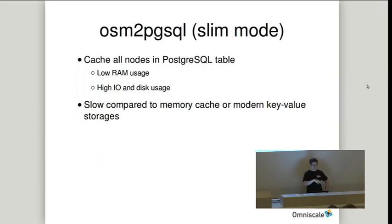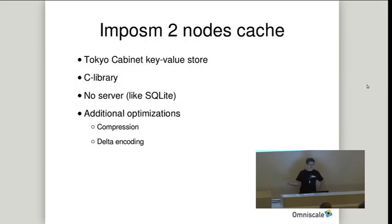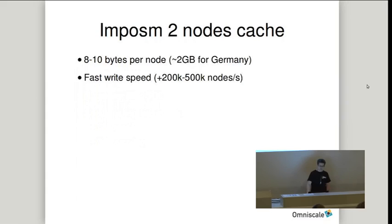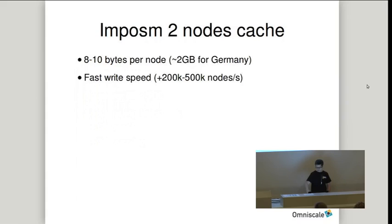The slim mode caches everything in PostgreSQL — it's much slower than memory or other modern key-value stores. So what we did with Impossum 2: we built a cache not in memory and not in PostgreSQL, but used a key-value store — in this case Tokyo Cabinet. It's a C library, a key-value database but not a server, similar to SQLite. We implemented additional optimizations using compression and delta encoding. In the end it's quite efficient — about 8 to 10 bytes per node — so you can cache all nodes of Germany in about 2 gigabytes, and it's fast: a few hundred thousand nodes per second.